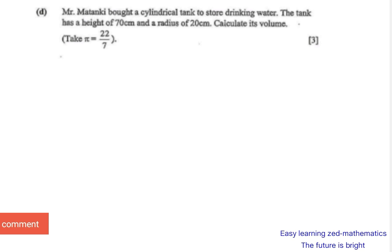The first thing you need to do is find the correct formula. The formula for the volume of a cylinder is: Volume = π r² h.